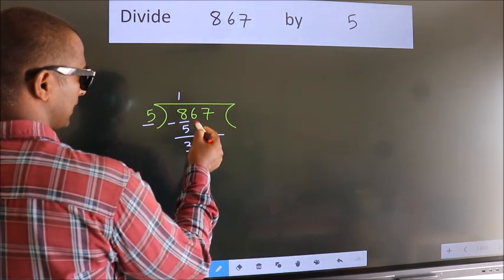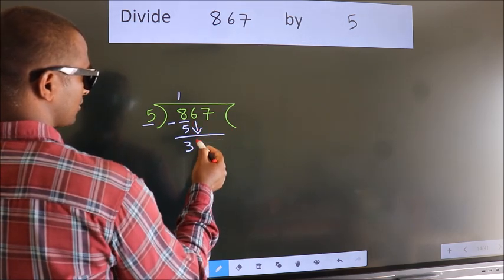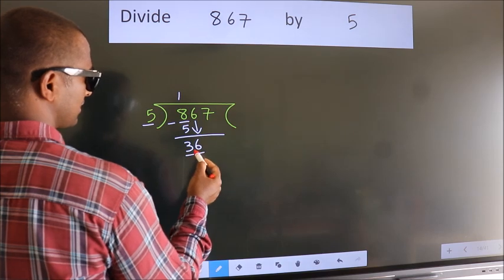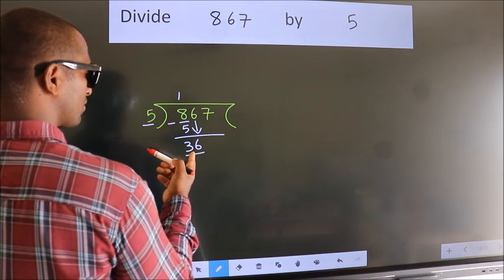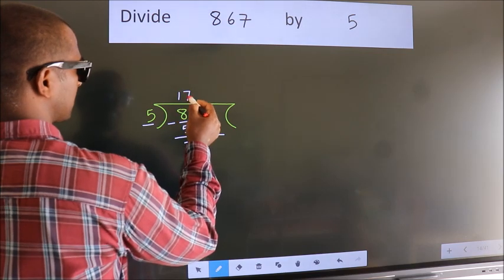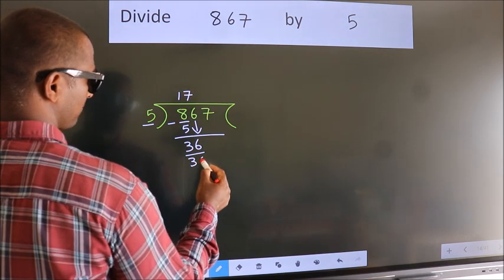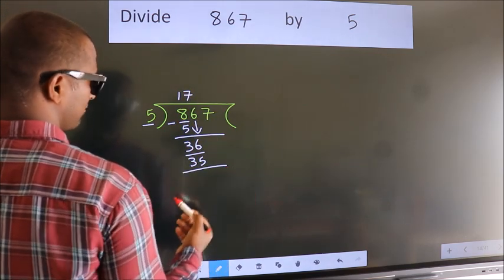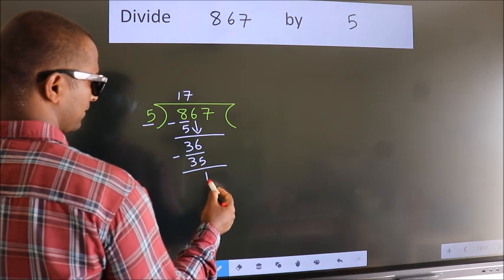After this, bring down the beside number. So 6 down. So 36. A number close to 36 in 5 table is 5 sevens 35. Now we subtract. We get 1.